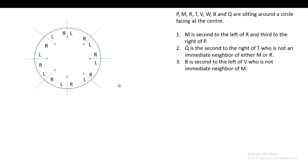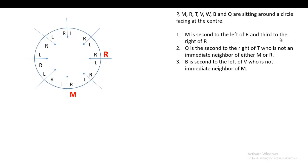Once you have fixed these things, go for the conditions. The first condition is: M is second to the left of R. Suppose M is sitting at a position — M is here, and it is second to the left of R, so R should be two places away. M is second to the left of R, which is in the clockwise direction.